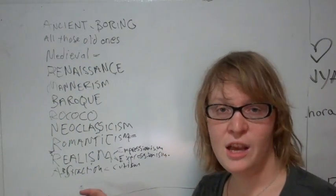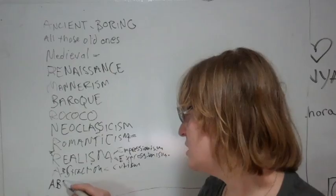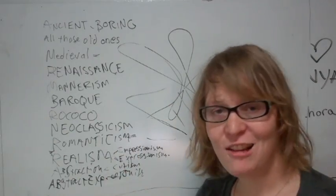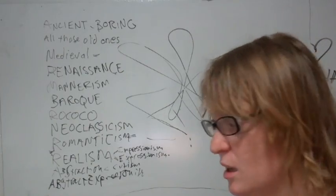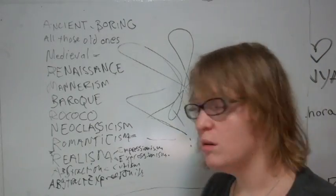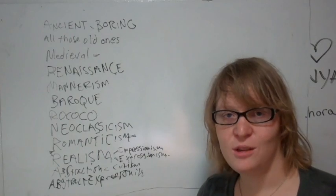So then you've got abstraction, then you go into abstract expressionism which is like you know it, you've seen it. Fucking Jackson Pollock, kind of Robert Rauschenberg, Mark Rothko, all those guys. And that's when we really come into the modern time.